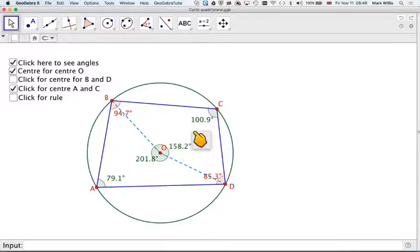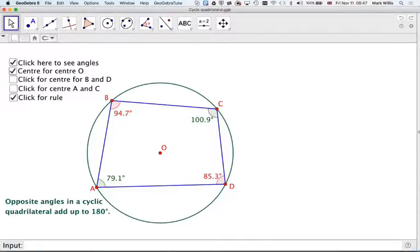If these are each half of the ones in the center, then these two will add up to 180. So what we're saying here is that the opposite angles of a cyclic quadrilateral, the opposite angles, add up to 180 degrees.